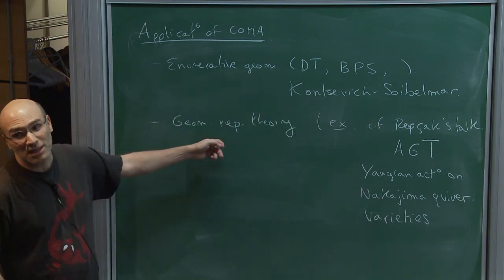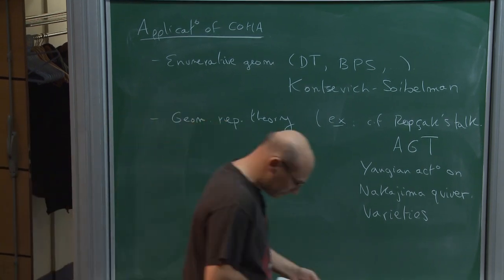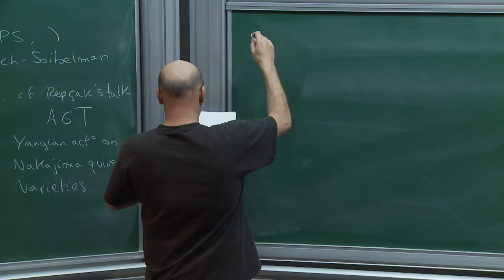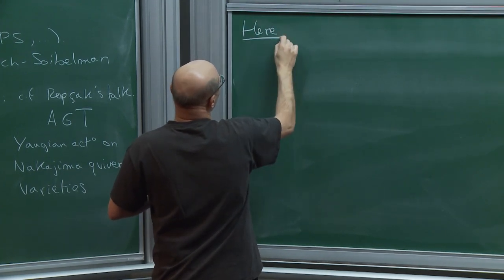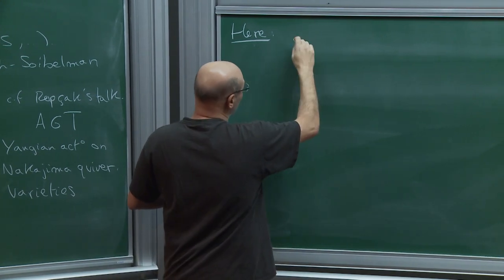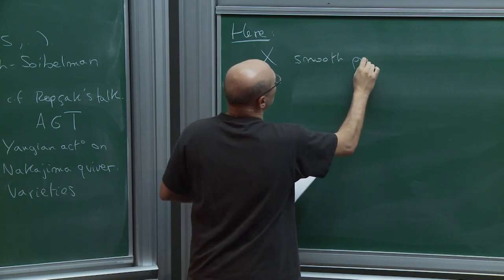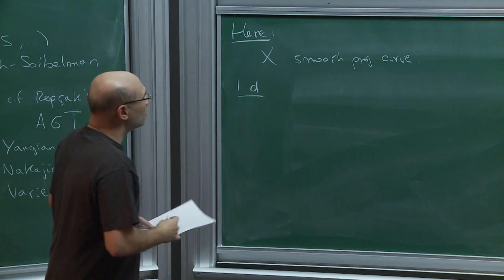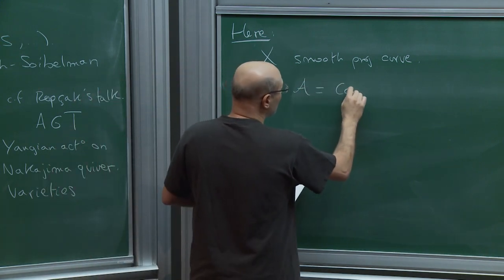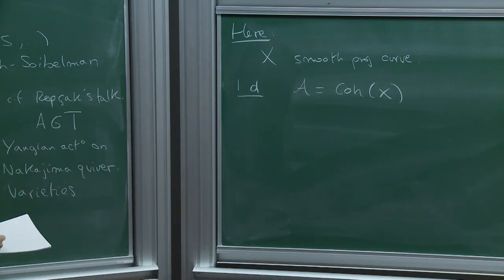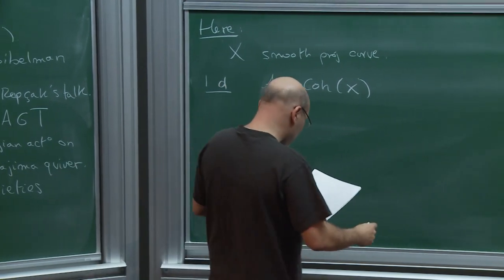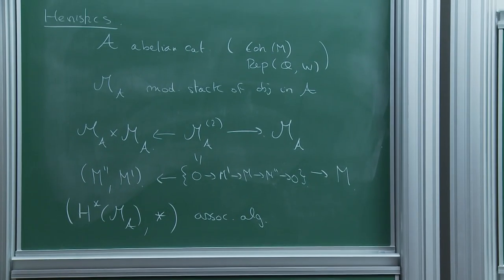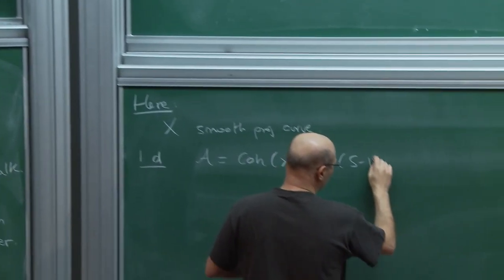In this talk I will really have the second type of application in mind. I want to consider two types of cohomological Hall algebras associated to a curve. So X is my smooth projective complex curve. The 1D CoHA would just take for A the category of coherent sheaves on X — this is not Calabi-Yau. I will talk about this as joint work with Eric Vasserot.